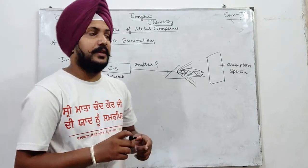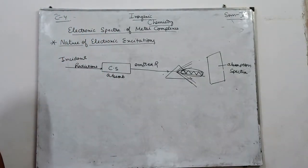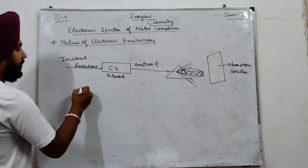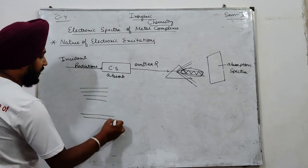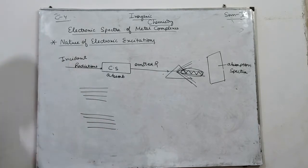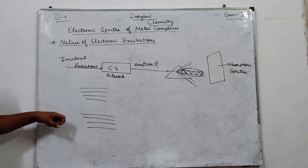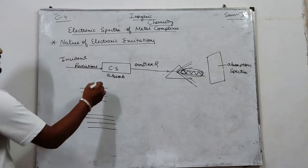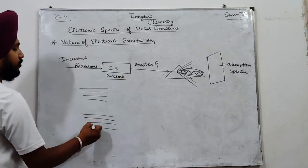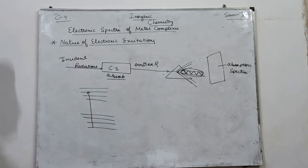What happens is our chemical substance absorbs some amount of energy. In our compounds, there are various energy levels. The atoms, molecules, and electrons are the species that absorb energy and transition from the ground state to an excited state.